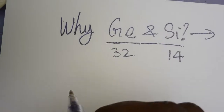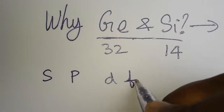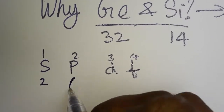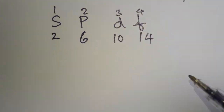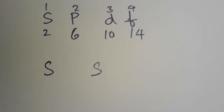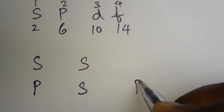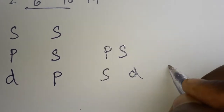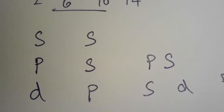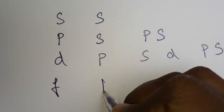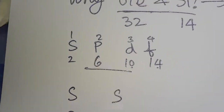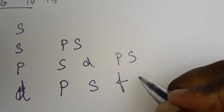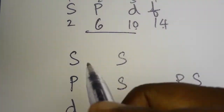The orbitals are s, p, d, f. For the number of electrons: s holds 2, p holds 6, d holds 10, and f holds 14. The first line is s, second line is s and p. Third line written in reverse is d, p, s. Fourth line is f, d, p, s — always written in reverse order.